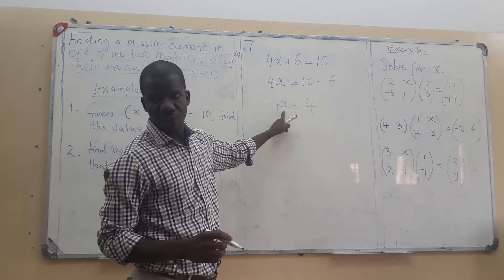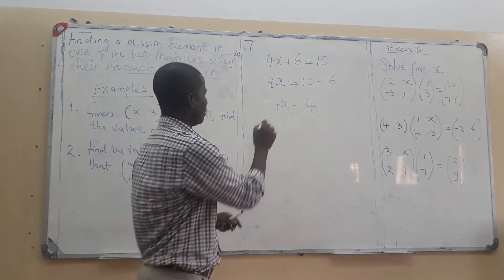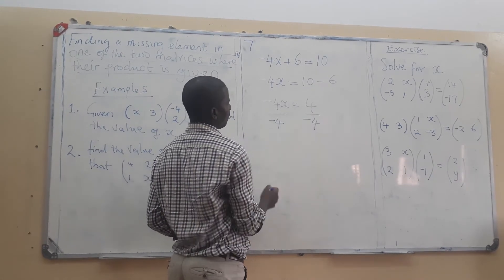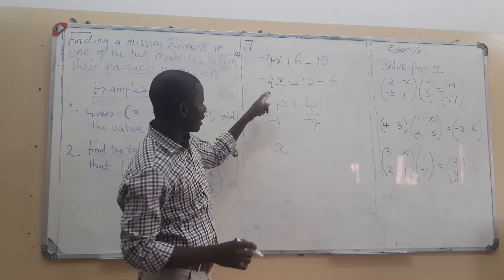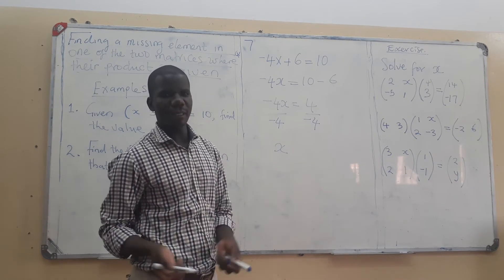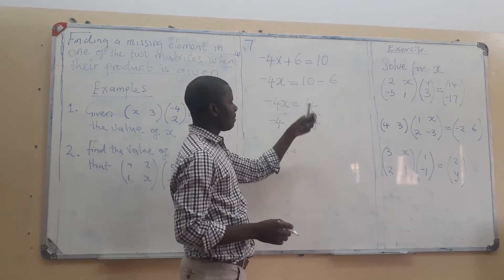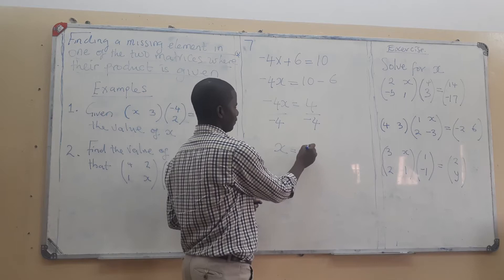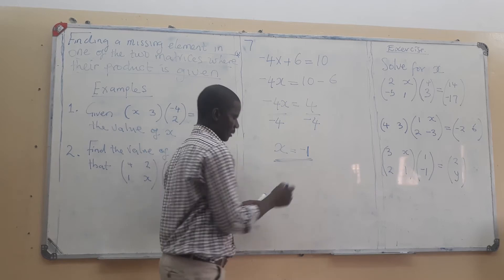So negative 4x equals 4. To find the actual value of x, we divide both sides by negative 4. This simplifies to x equals negative 4 divided by negative 4 — wait, 4 divided by negative 4. A positive divided by a negative gives a negative, so x equals negative 1.